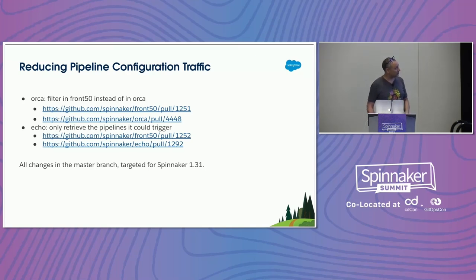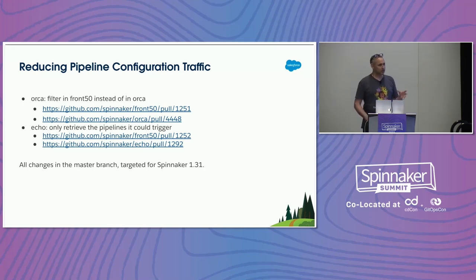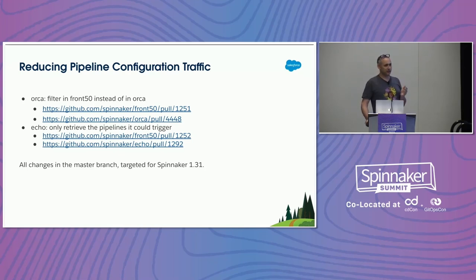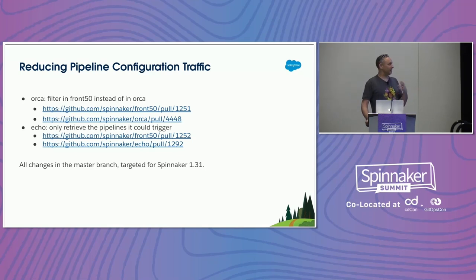The PRs are merged — going into 1.31, behind feature flags defaulted to off. The fix: Orca was querying for all pipelines and then filtering, dropping 99% of what it asked for. Instead, move the filtering into Front50, so Front50 only returns what Orca actually needs. Similarly, only some pipelines have triggers defined, so Echo should only ask Front50 for pipelines that actually have enabled triggers — not all pipelines all the time.